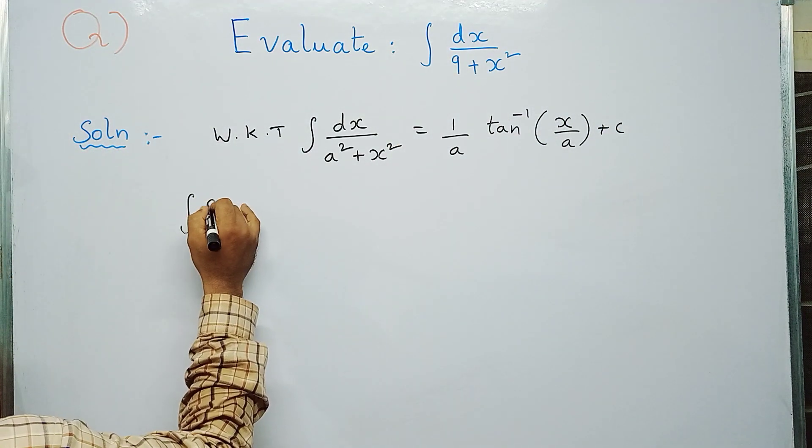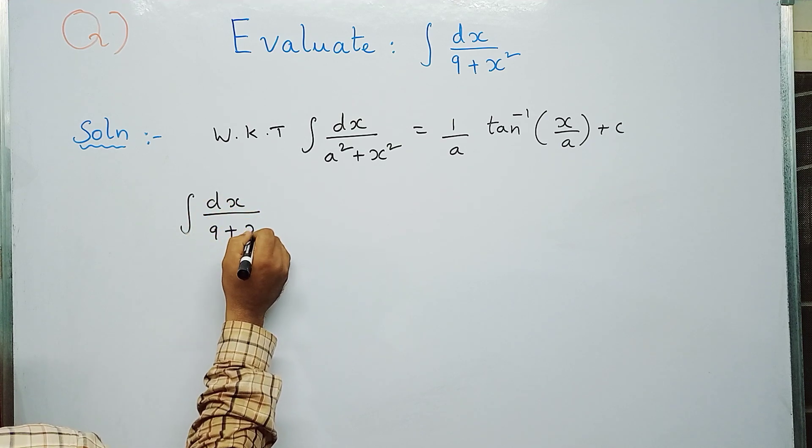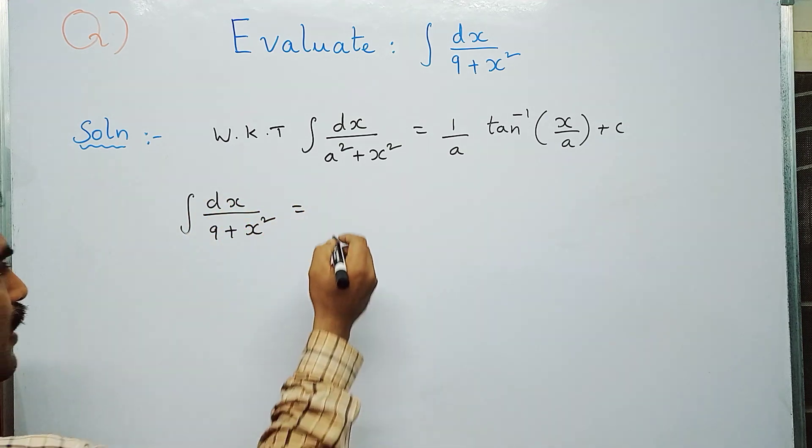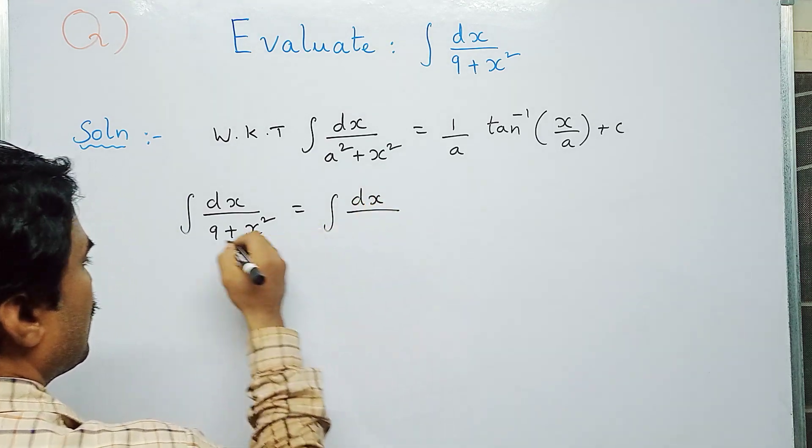So I write this given integral. The given integral is integral dx by 9 plus x squared. I can write this as integral dx by 3 squared plus x squared.